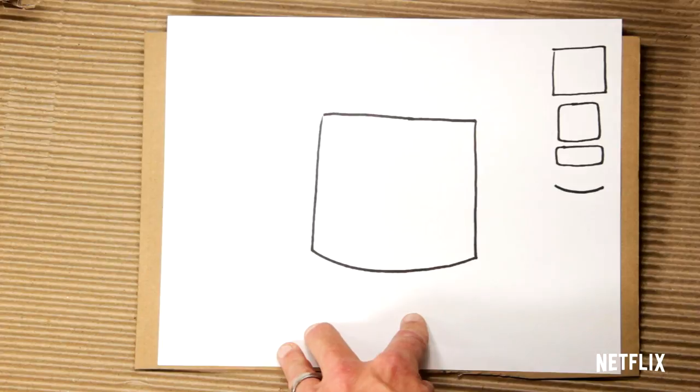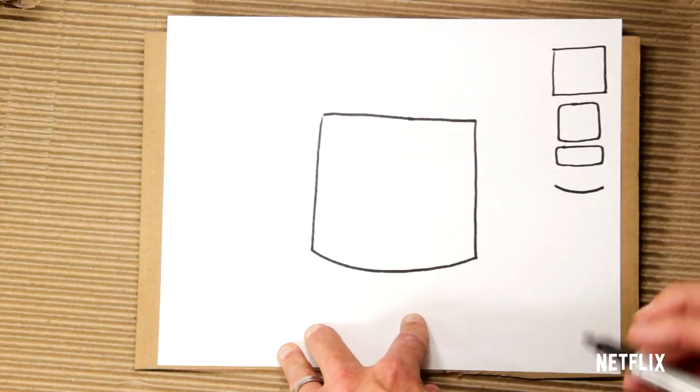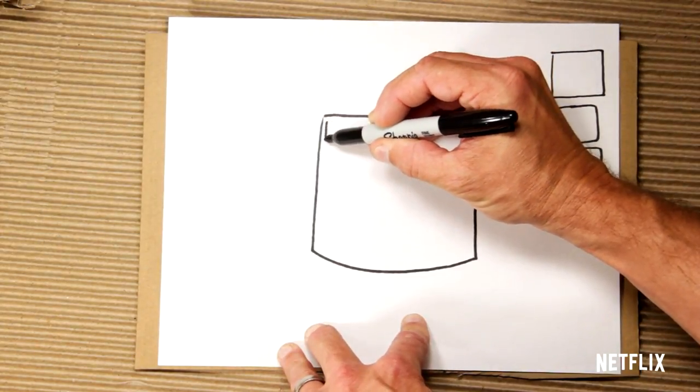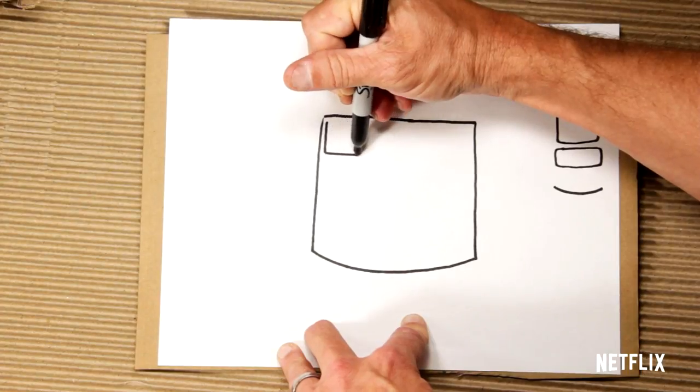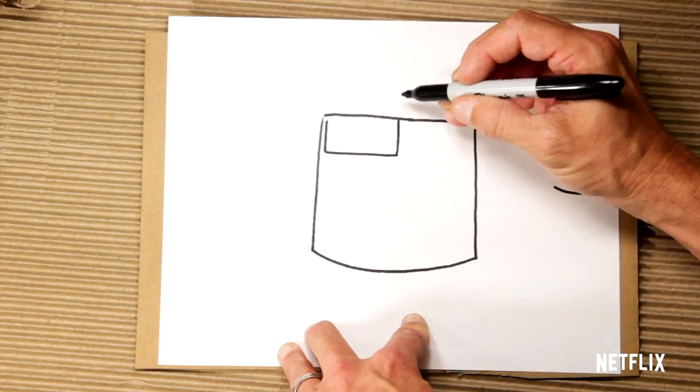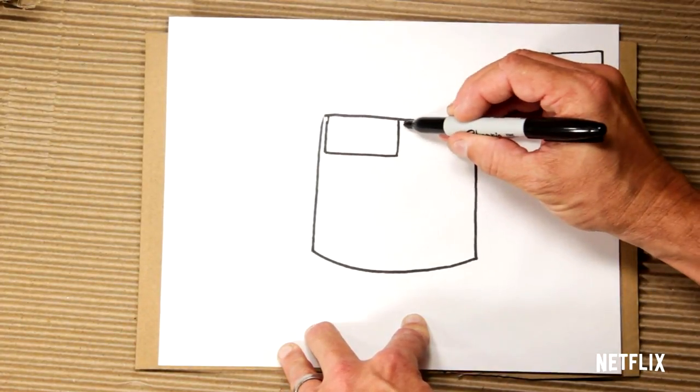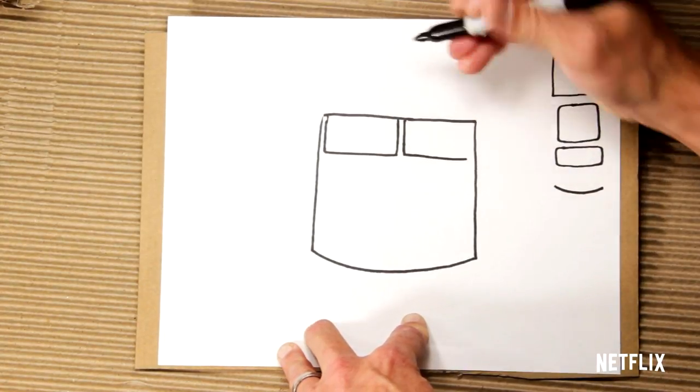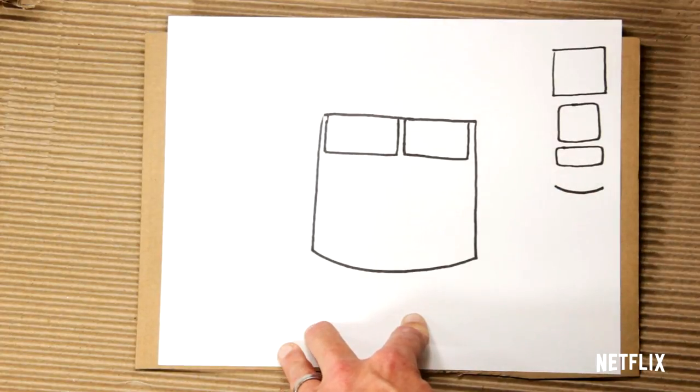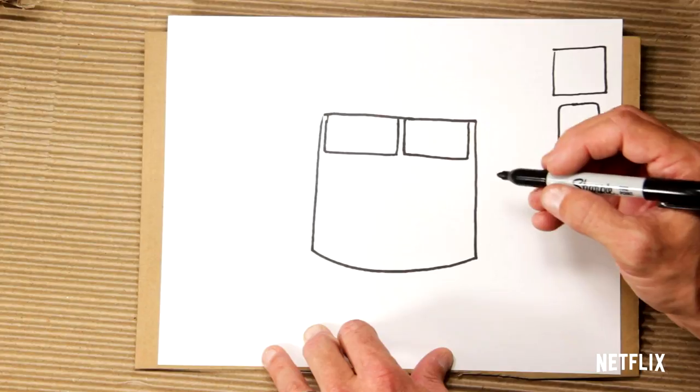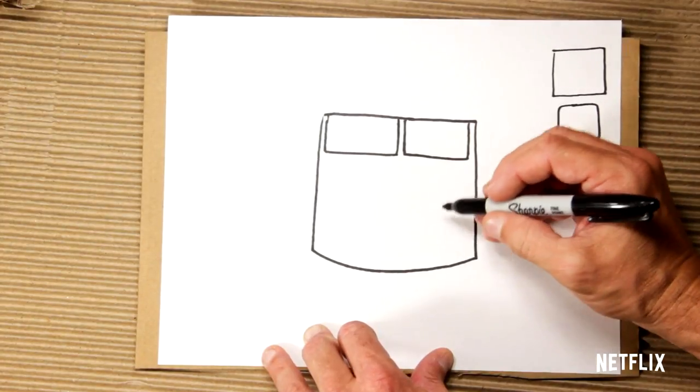Next, let's do some windows, two squares. Let's go right up to the front there. Yeah. Now let's do these other kind of square shapes.